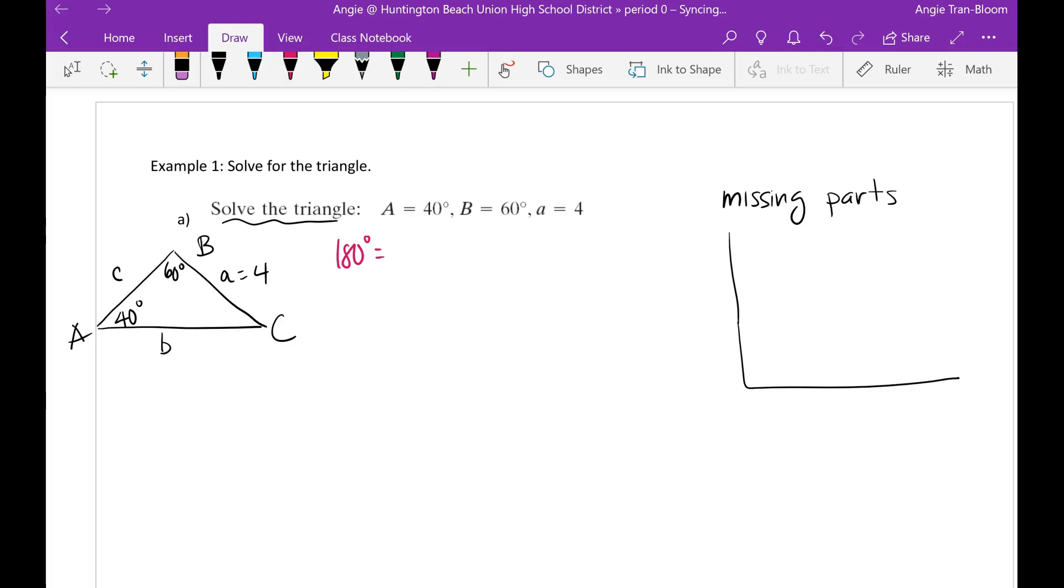Let me just write the symbol angle. So angle A plus angle B plus angle C equals 180. You already know these two, A and B. So A is 40, B is 60. So those two already give you 100. So now I'll solve for C. So angle C is just going to be 80 degrees. So right away, you know angle C is 80 degrees.